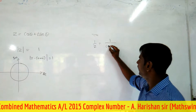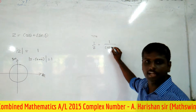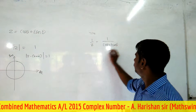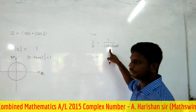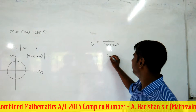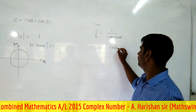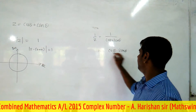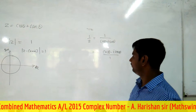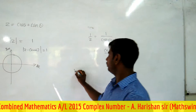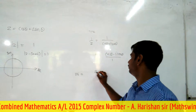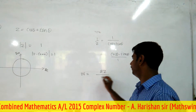Now they ask you to find 1/z. So 1/z = 1/(cos θ + i sin θ). If you multiply by the conjugate, cos θ − i sin θ, over itself, you get 1/z = cos θ − i sin θ.